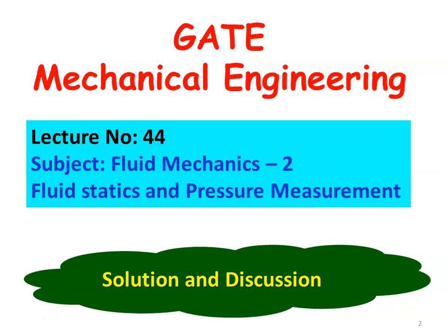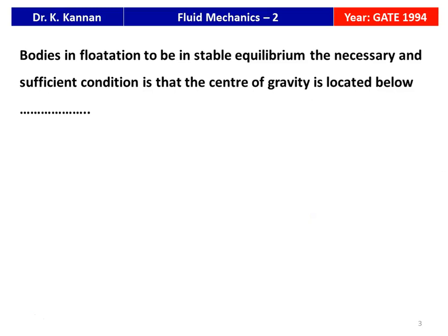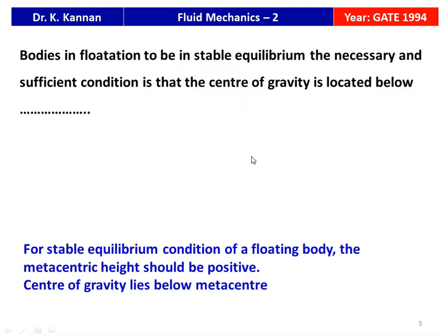The questions are from the Gate Question Paper in Fluid Statics and Pressure Measurement. The first question is from the 1994 Gate Question Paper: 'Bodies in flotation — to be in stable equilibrium, the necessary and sufficient condition is that the centre of gravity is located below ___.' The topic is buoyancy. For stable equilibrium of a floating body, the metacentric height should be positive, meaning the centre of gravity lies below the metacentre. So the correct answer to fill in the blank is: the centre of gravity is located below the metacentre.